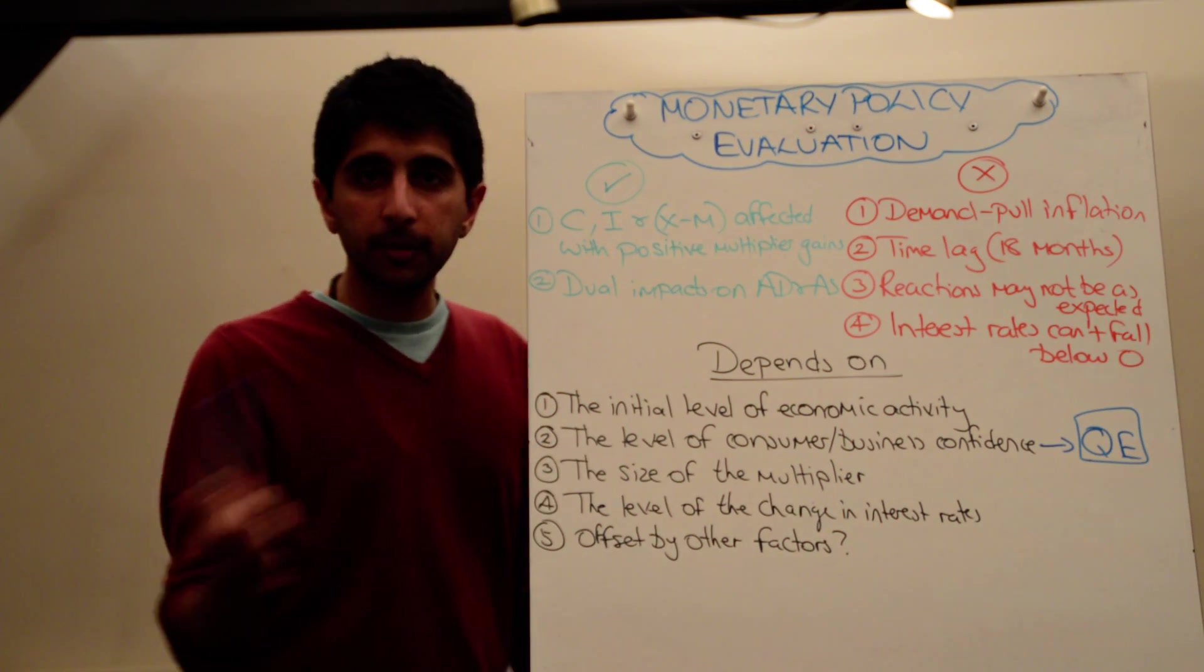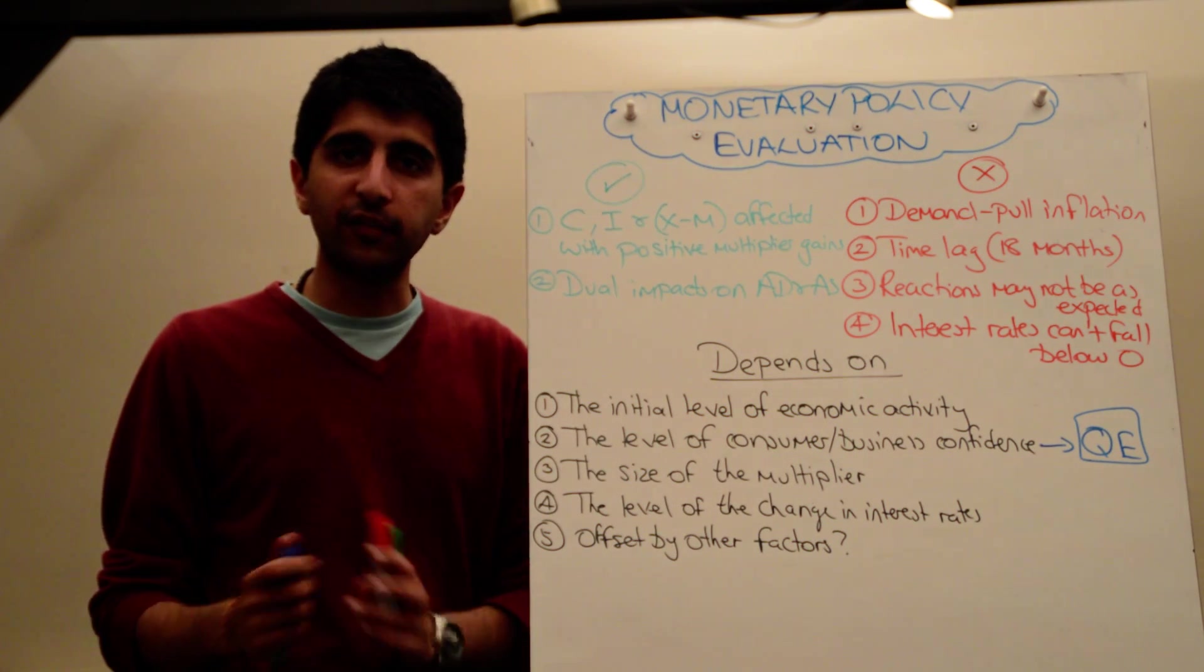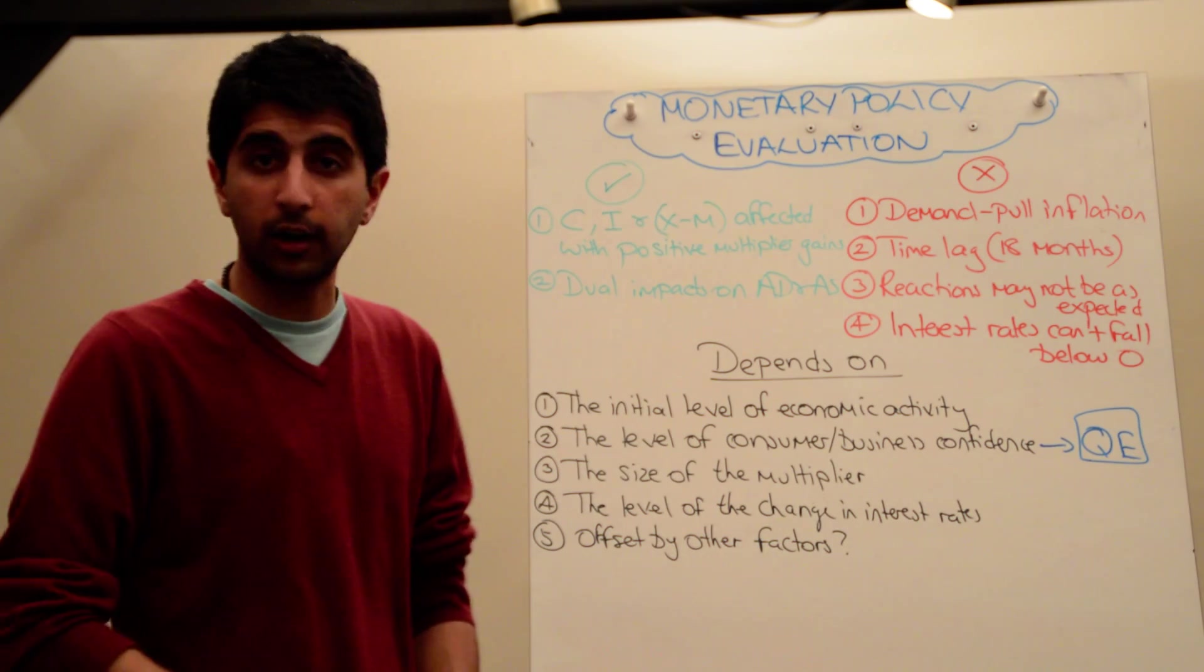The size of the multiplier, the bigger the multiplier, the less interest rates need to be cut for there to be a large increase in growth and a large reduction in unemployment.